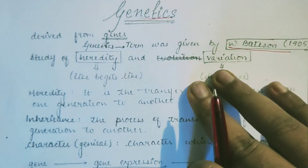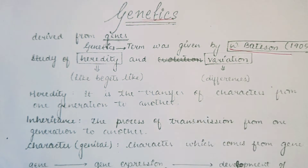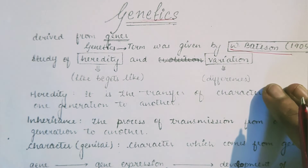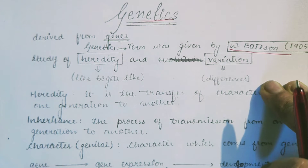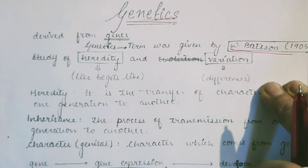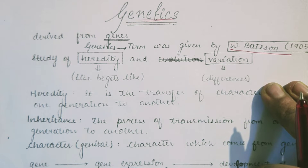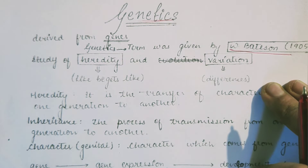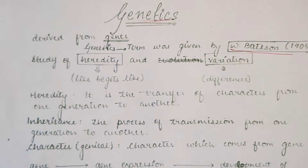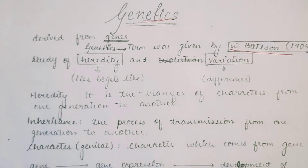Variation occurs due to the transmission of characteristics. Sometimes mutation occurs suddenly due to any environmental changes or environmental factors. According to those changes, species adaptation leads to variation. That is called mutation.